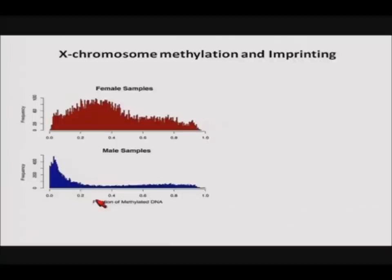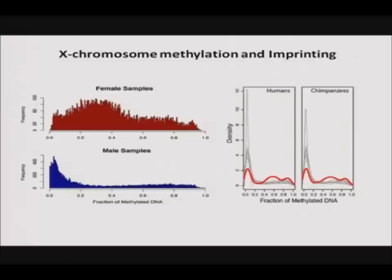Next, we looked at the distribution of methylation levels on the X chromosome. Since methylation is a primary mechanism of X-chromosome inactivation, we'd expect higher overall methylation in females than males. Plotting histograms of X-chromosome methylation in female samples versus male samples, the clear excess of hemimethylated sites in female samples confirms this expectation. We also looked at methylation at genes known to be imprinted in humans and found that these genes show a similar pattern of hemimethylation in chimps, suggesting that the imprinted status of this gene set is conserved between the two species.